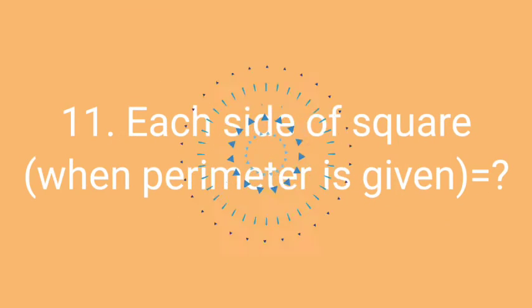Question number eleven: Each side of square when perimeter is given is equals to what? Think the correct answer of this question within 10 seconds. The timer is going to start now.